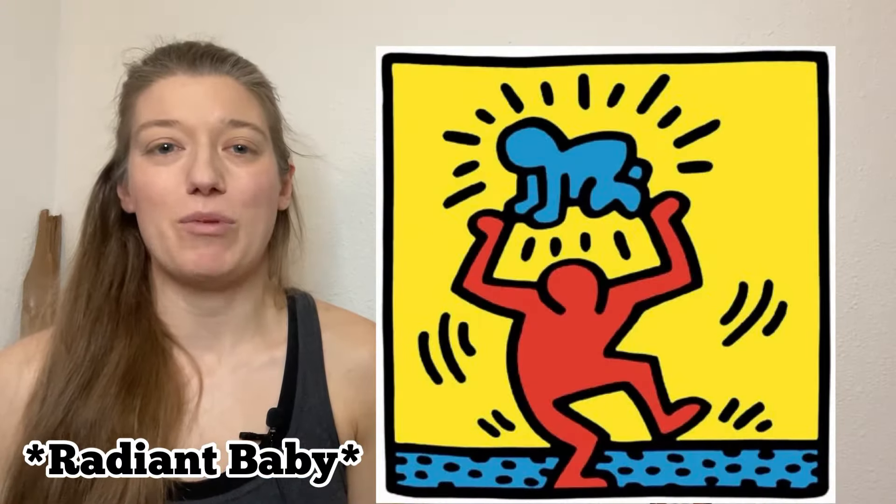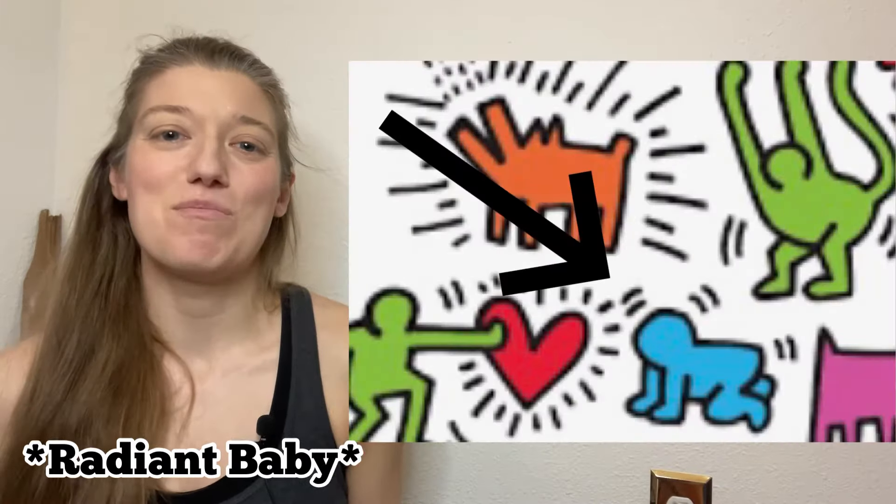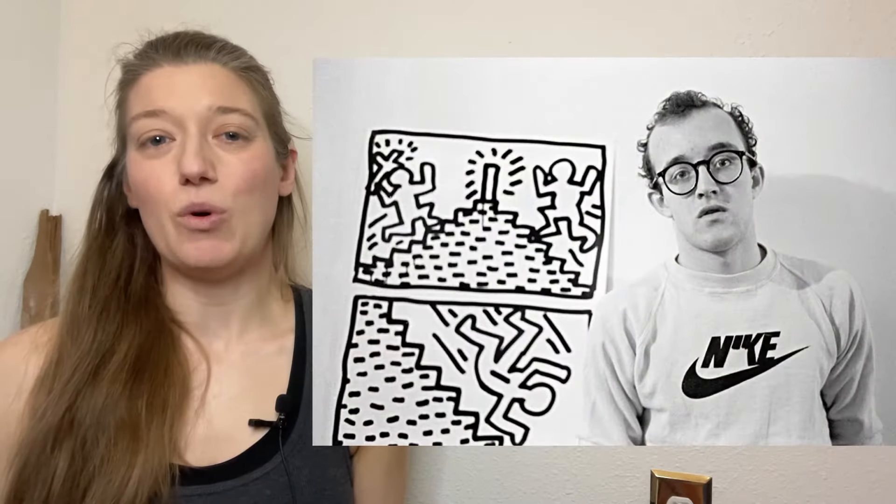To him, this baby represents youthful innocence, goodness, purity, and potential. Keith uses bold black lines to outline his subjects. He also uses lines outside the bodies to suggest movement.